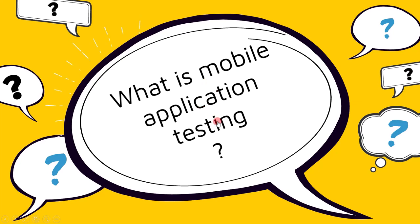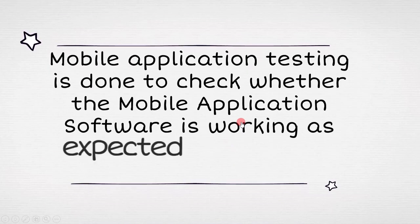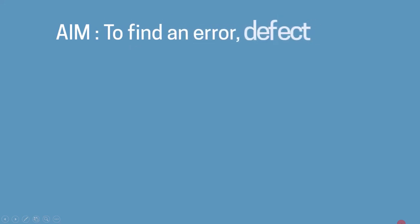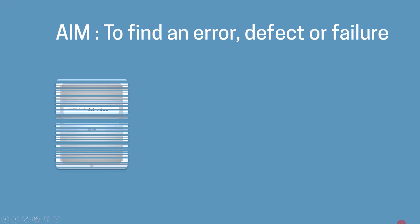What is mobile application testing? Mobile application testing is done to check whether the mobile application software is working as expected, or as per the specified document. And the aim of mobile testing is to find an error, defect, or failure.